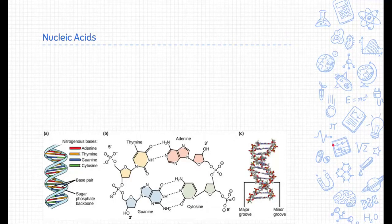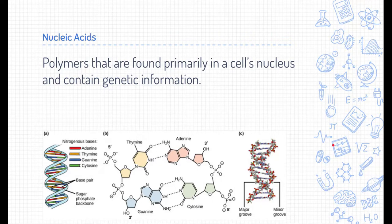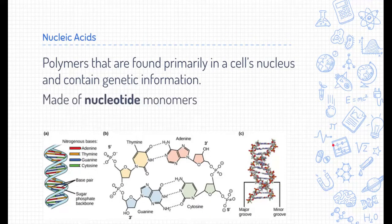The last type of natural polymer are nucleic acids. Nucleic acids are polymers that are found primarily in the cell's nucleus and they contain the genetic information. Nucleic acids, the genetic information, are often used to build proteins as we talked about in the last slide. Now, nucleic acids are built from monomers called nucleotides. Here you can see four different nucleotides in their skeletal structure. Thiamine, adenine, guanine, and cytosine are four examples of nucleotides that make up nucleic acids.